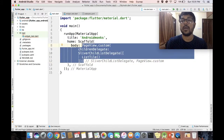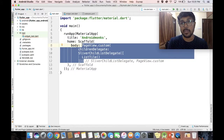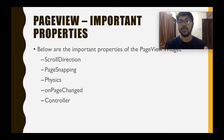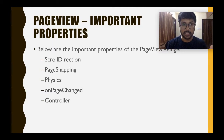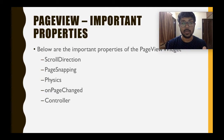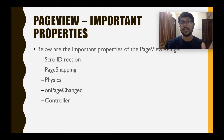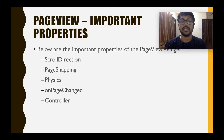Next, we're going to check out the different properties that the page view widget has. It has many properties common to all three methods. The five important properties we're going to talk about are: scroll direction, page snapping, physics, on page changed, and controller. These five are common to all three methods.